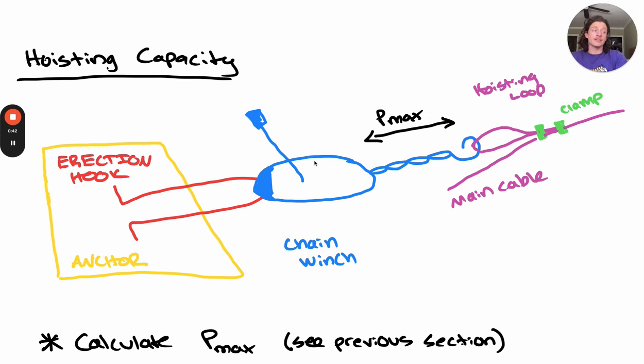As we winch the cables up to their construction sag, we're going to eventually reach our value of Pmax. The winch is hooked to a hoisting loop, which is then clamped to the main cable in order to hoist it up to the construction sag, where we fix the cable and let it sit for 24 hours.